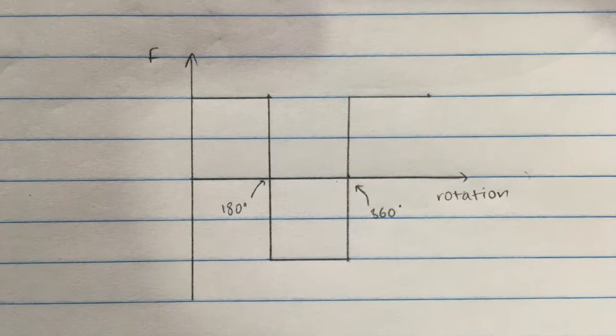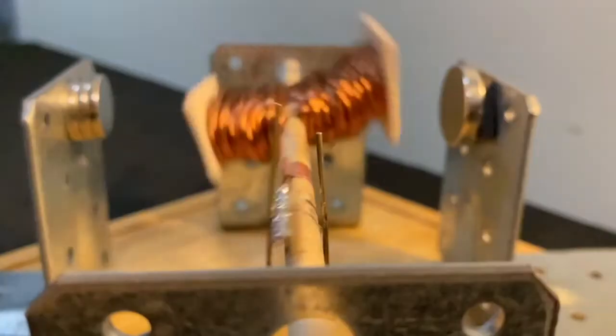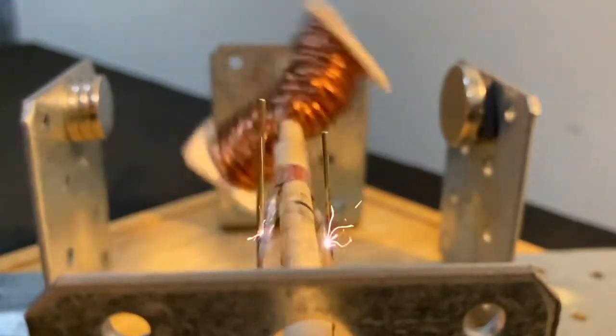Due to this, the direction of the force will also alternate at the axis, producing a constant rotation of our armature. So we've explained the working of a motor through the motor effect. Now we will analyze it through the principles of torque.